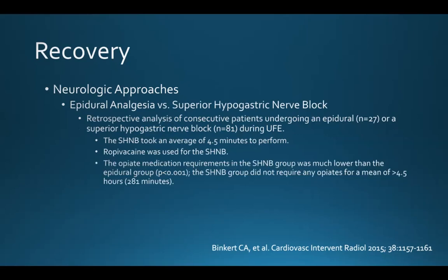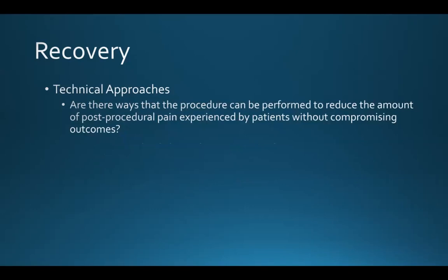A retrospective study evaluated consecutive patients undergoing either an epidural or a superior hypogastric nerve block. They pointed out that the nerve block took an average of 4.5 minutes to perform, using ropivacaine as the medication. The opiate medication requirements in the superior hypogastric nerve block group were much lower than the epidural group, and the nerve block group did not require any opiates for a mean greater than 4.5 hours.